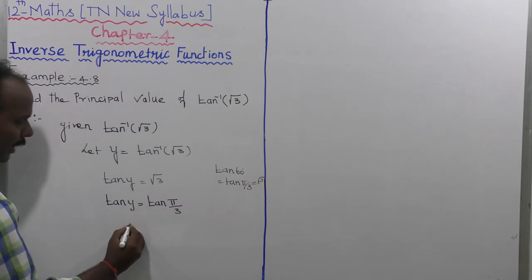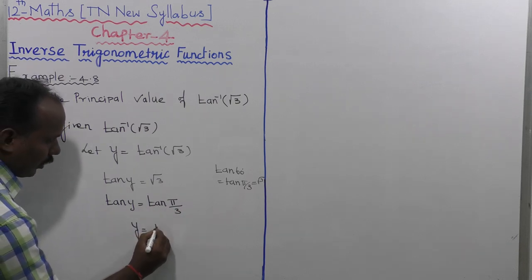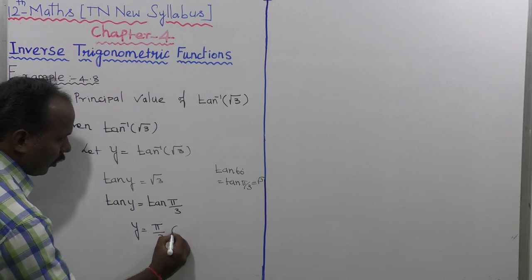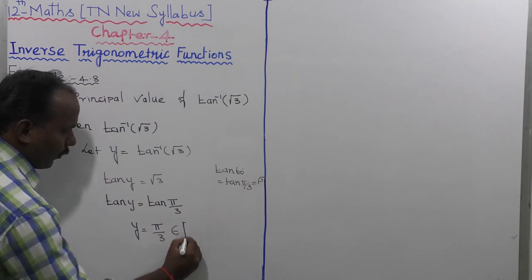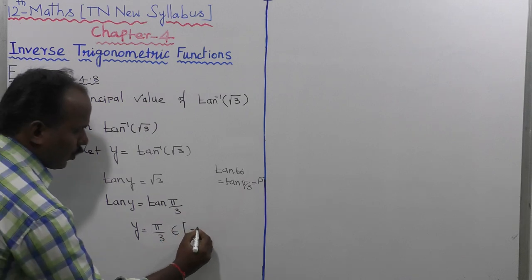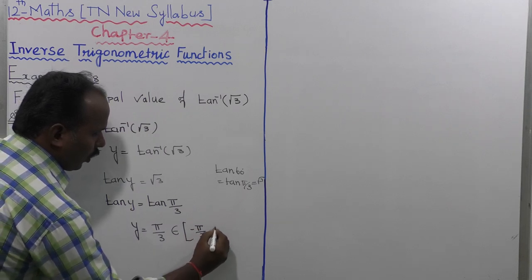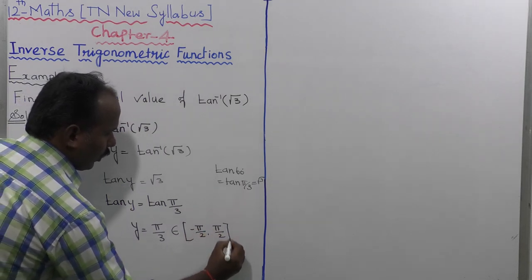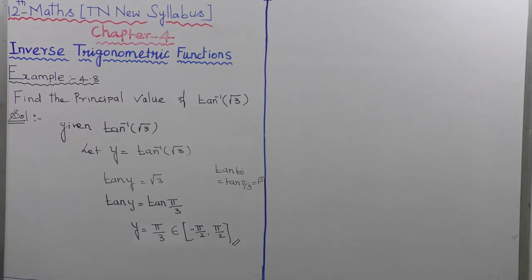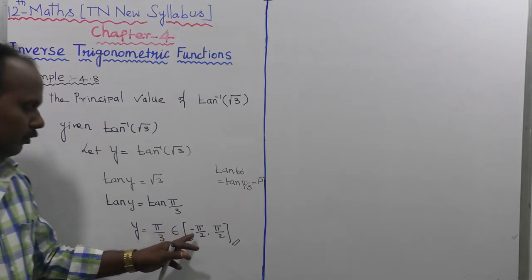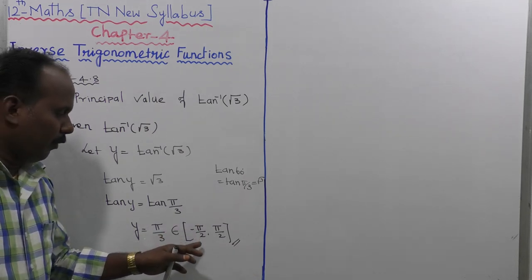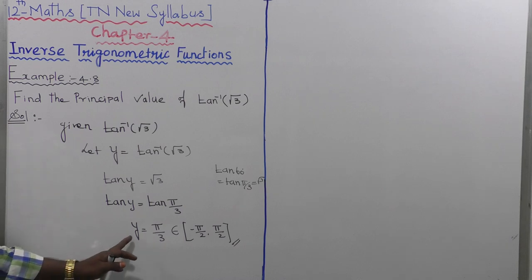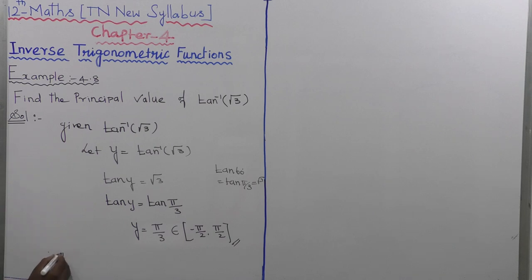The tan cancels on both sides, so y is equal to pi by 3. Since the range of tan inverse of x is the closed interval minus pi by 2 to plus pi by 2, and y equals pi by 3 belongs to this interval, the result is valid.